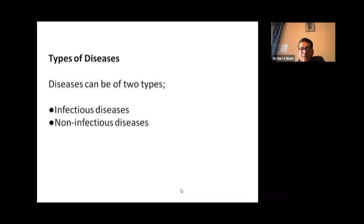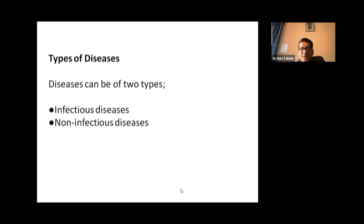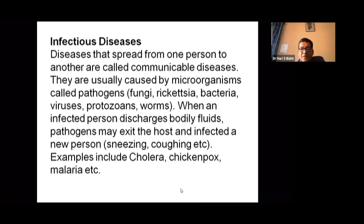The last principle is that governments have a responsibility for the health of their peoples, which can be fulfilled only by the provision of adequate health and social measures. These are the obligations of the WHO, an integral part of the United Nations. Diseases can be basically divided into two categories: infectious or communicable diseases, and non-infectious or non-communicable diseases.